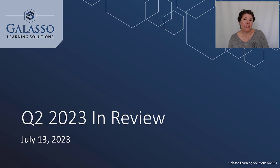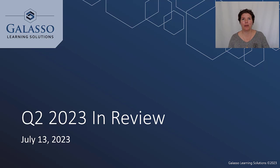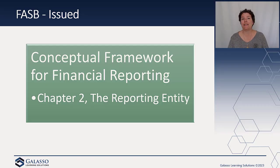It was a lighter quarter. From April to June, we didn't see a super ton of activity, but there were a handful of things that we need to be aware of, starting with the FASB standards.